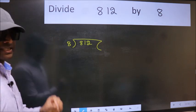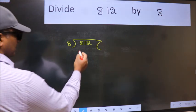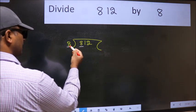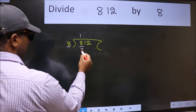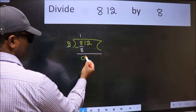This is your step 1. Next, here we have 8 and here 8. When do we get 8 in 8 table? 8 once 8. Now we should subtract. We get 0.